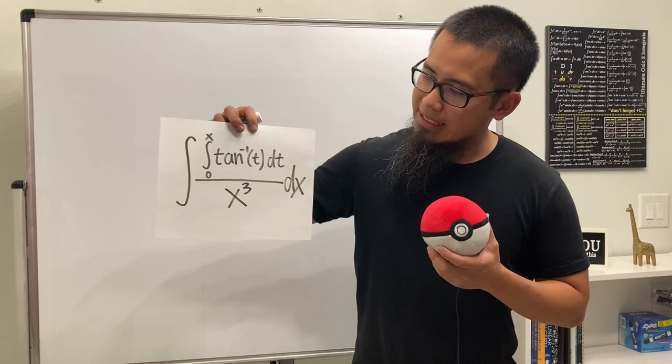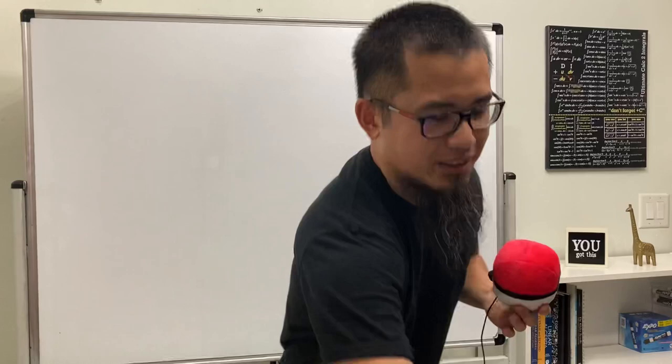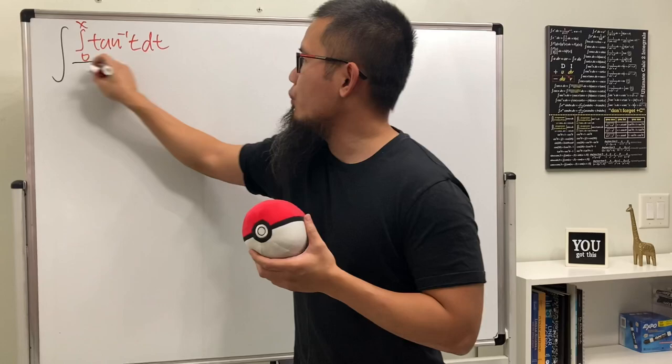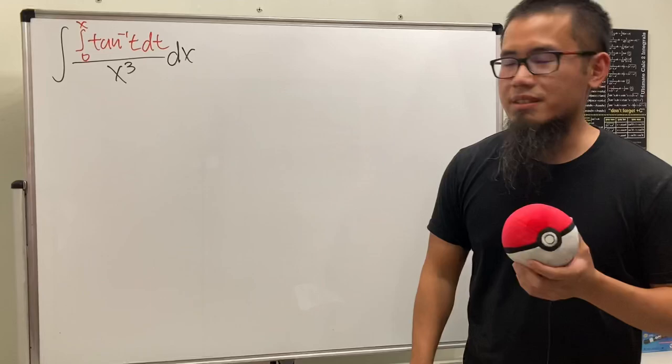I really want to put this integral on my calculus 2 test next week, but I think I shouldn't because I want my students to come back to my class. However, I also don't want to waste this integral so let's do it right now. We'll be integrating the integral going from zero to x of inverse tangent of t dt, over x to the third power. I came up with this and it has a very nice answer — and the best part is that all we need is just calculus 2 techniques.